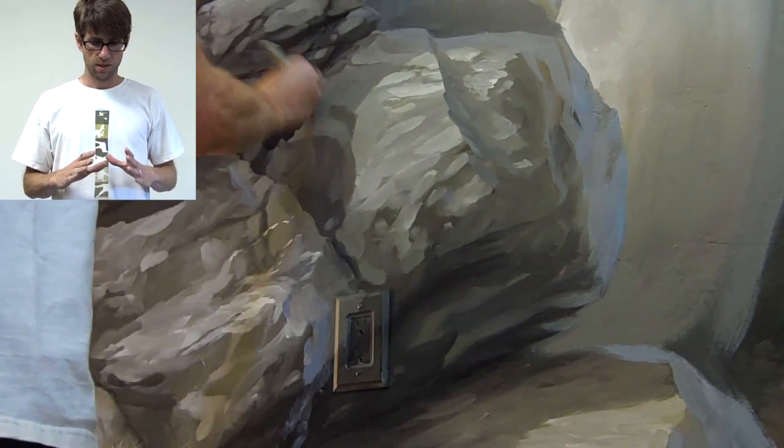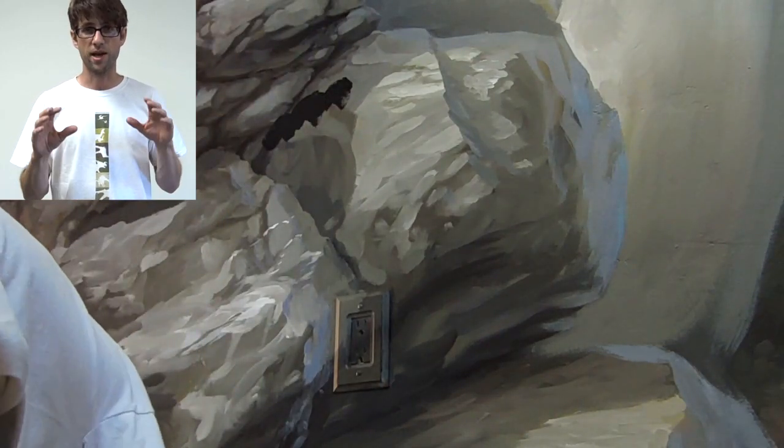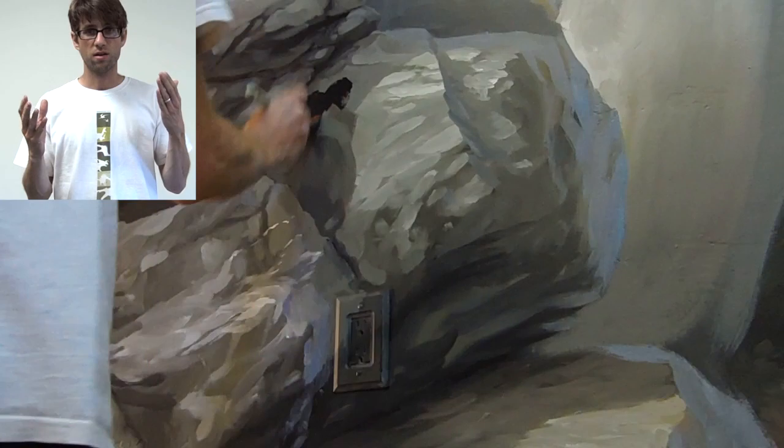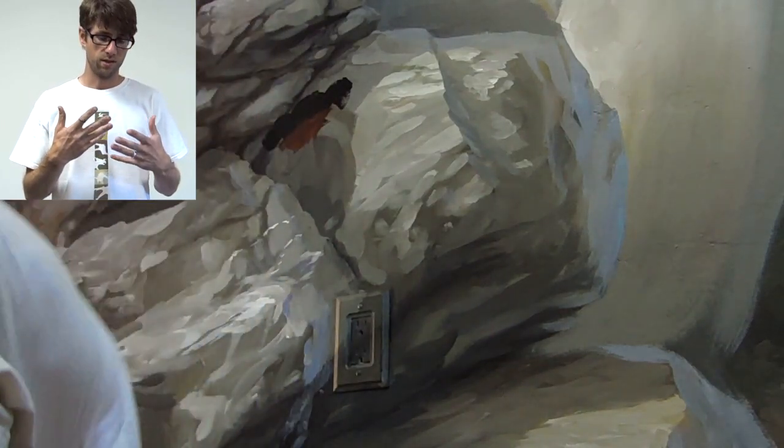So the way I do that is I start with black, and then I start adding red. In this case, with these rocks, I'm adding red and green. They're opposite colors on the color wheel, and when you mix them, they're going to create brown.